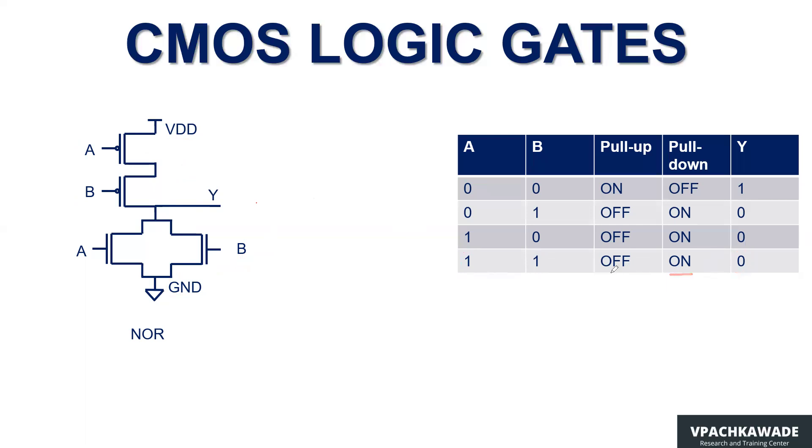So you can notice the very important point here in the CMOS logic of pull up network and the pull down network at a time, only one of the network is turned on and then other is turned off. So if here it is on, other is off, here it is off, other is on and you can check the other conditions also. So that's the complementary logic.